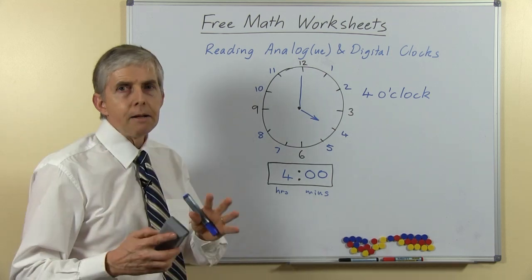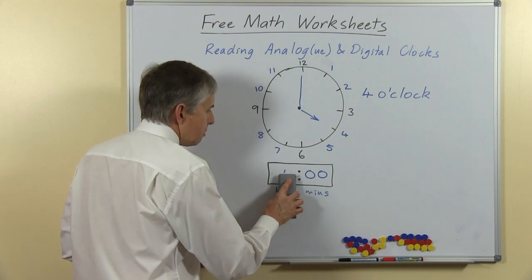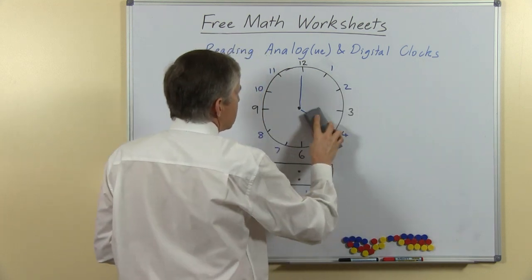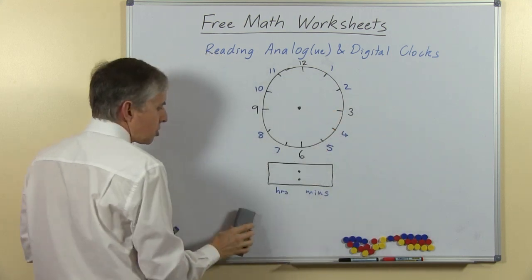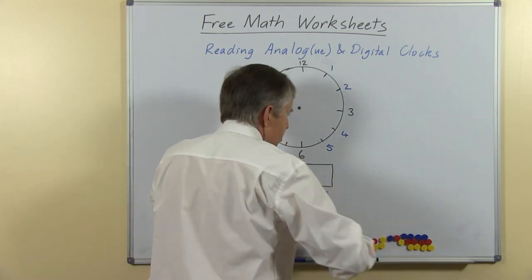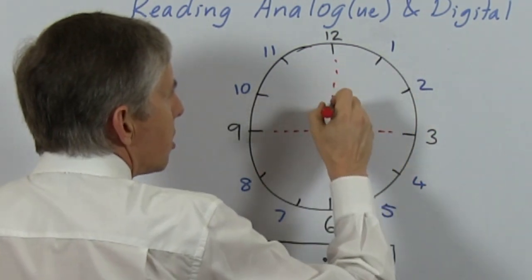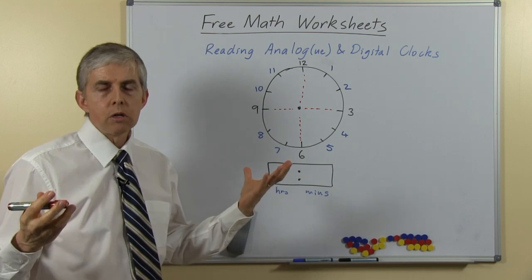There are 3 times that you should learn after you know the o'clock times, and I'm going to show you those. The 3 other times that I'm going to show you are the quarter times. If we look at a clock, an analog clock, it's divided into 4 quarters.